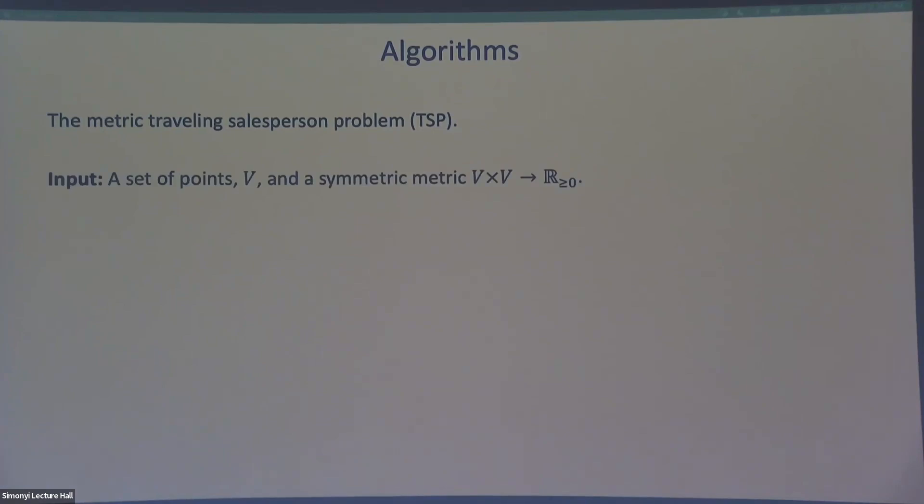Okay, so what is it? What's the input? You get a set of points, which I like to think of as the vertices of the graph, and you get some distance measure between them. So it takes the form of a symmetric metric, and I like to think of it as the edges of a complete graph. So these weights on these edges just tell you the distance between the pairs of vertices.